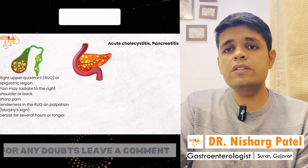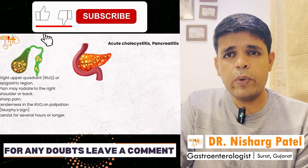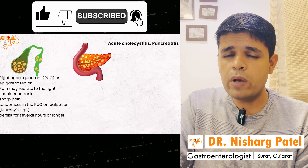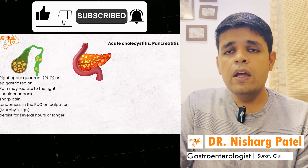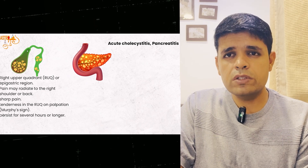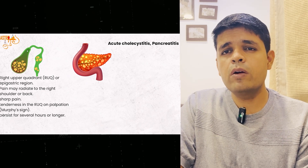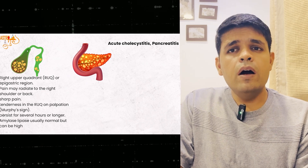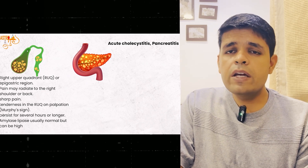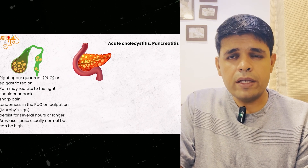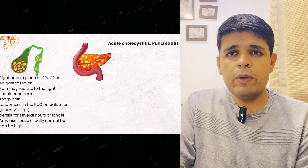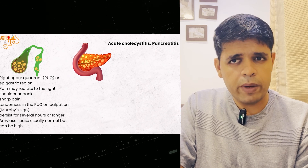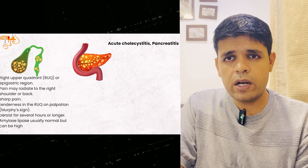Acute cholecystitis requires emergency surgery. If you can diagnose this within 24 hours, refer the patient to a surgeon for immediate laparoscopic or open cholecystectomy. Amylase and lipase are usually normal in cholecystitis but can be elevated — so we must not assume that high amylase/lipase always means acute pancreatitis.